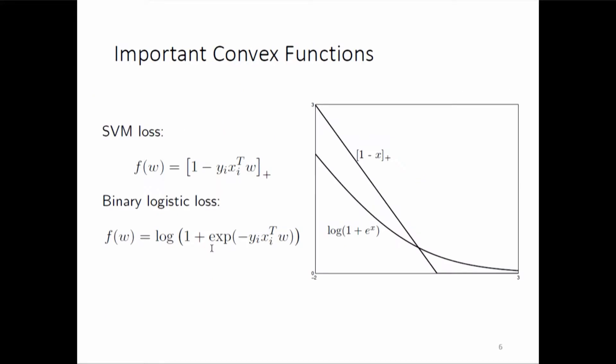For example, the loss at the top of the screen is the SVM loss or support vector machine loss, and the loss at the bottom is for binary logistic regression. This diagram shows the two losses and you can understand that both of them are convex losses — convex in x. Lagrangian was covered, so you all know about Lagrangian and the dual formulation.